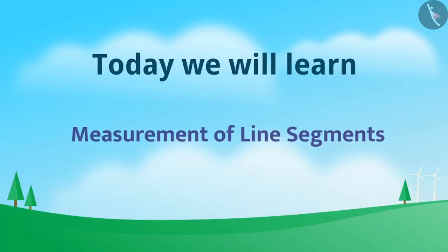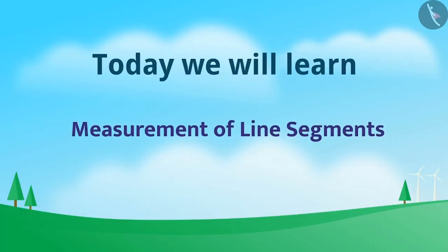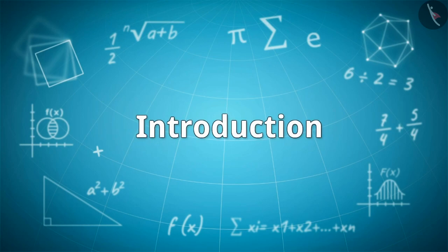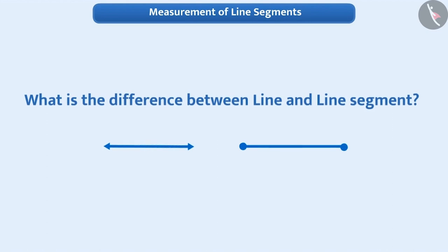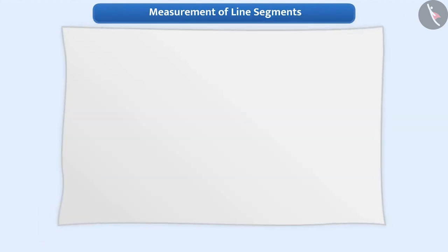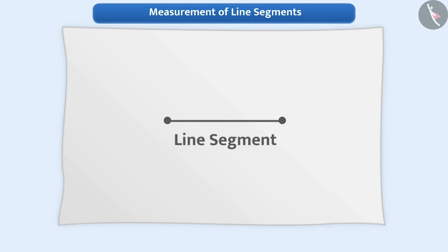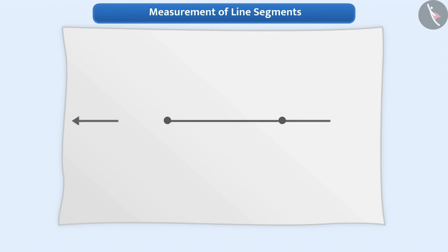Today we are going to learn measurement of line segment. Let's first understand what is the difference between line and line segment. If we mark two points on paper and join them through the shortest path, then we get a line segment. We call the distance between two points of a line segment as the length of the line segment. Every line segment has a fixed length. If we keep on extending the line segment from both ends infinitely, then we get a line.